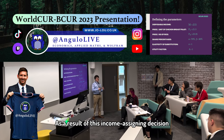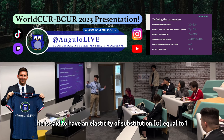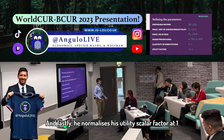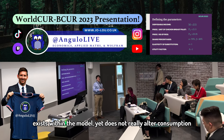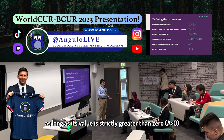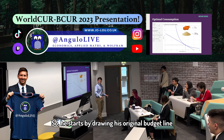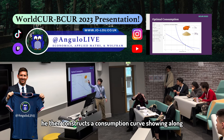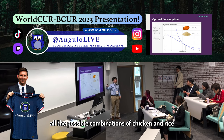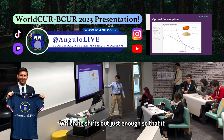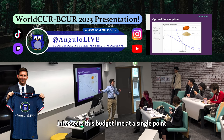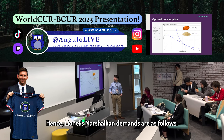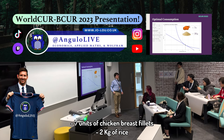As a result of this income-assigning decision being independent of the relative prices, he is said to have an elasticity of substitution equal to 1. And lastly, he normalizes his utility scalar factor at a value of 1 because it contains a variable that exists within the model yet does not really alter consumption as long as its value is strictly greater than 0. So, he starts by drawing his original budget line, representing the £15 limit that he has on consumption. He then constructs a consumption curve showing all the possible combinations of chicken and rice that he can obtain given his preferences, which he shifts out just enough so that it intersects this budget line at a single point. That is what we call a point of optimality and, in this context, a Marshallian Demand. Hence, Lionel's Marshallian Demands are: seven units of chicken breast and two kilograms of rice.